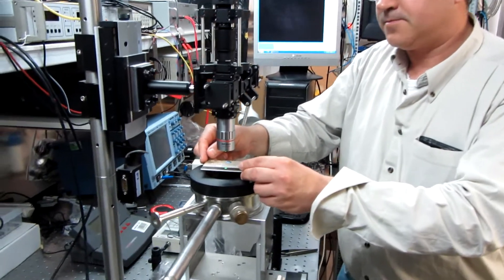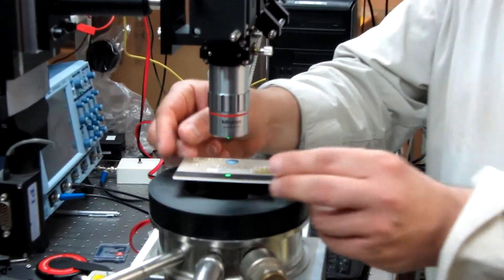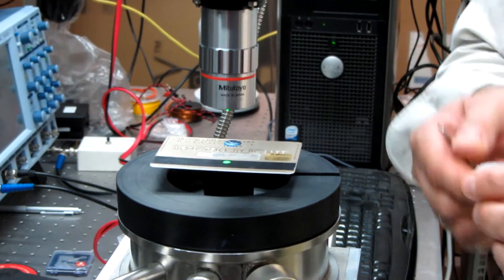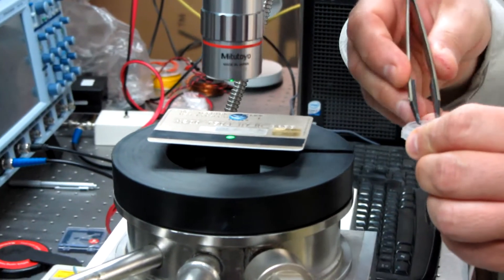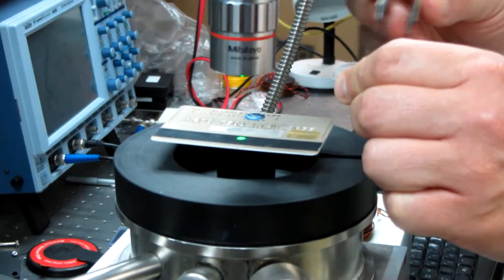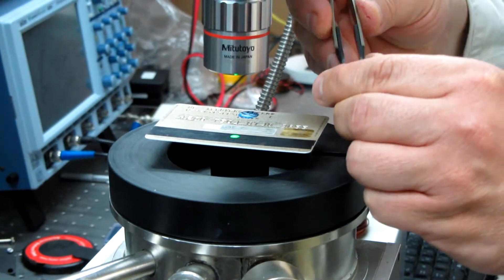So we'll put it here. And then all we need to do is to put the indicator of the magneto-optical film on top of the credit card. And we will see what the camera shows us.